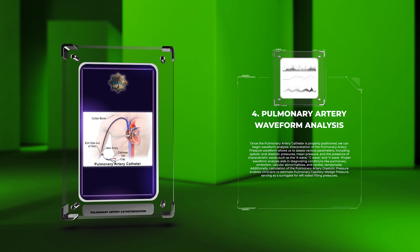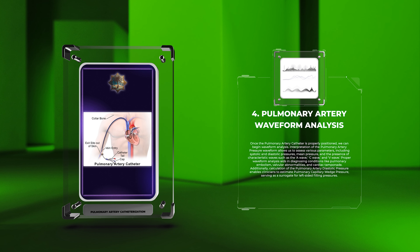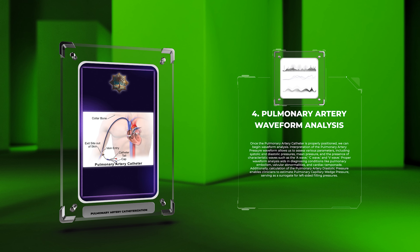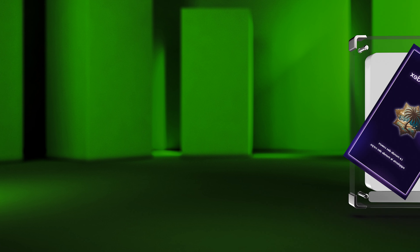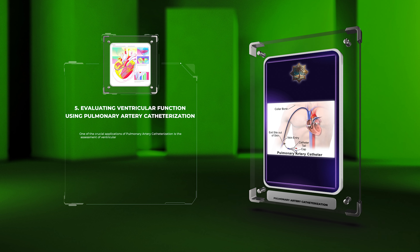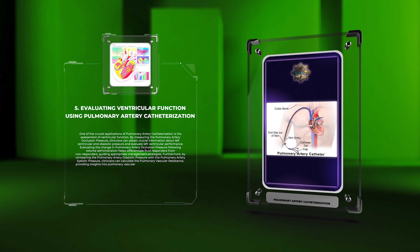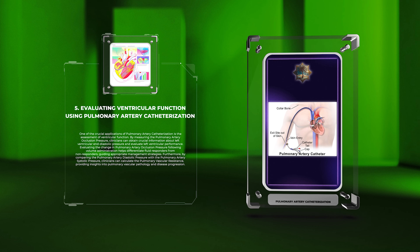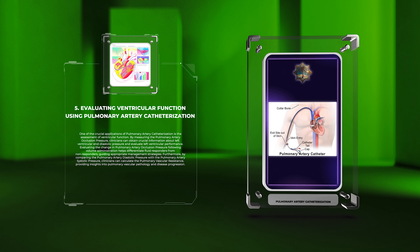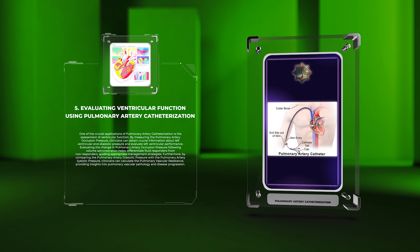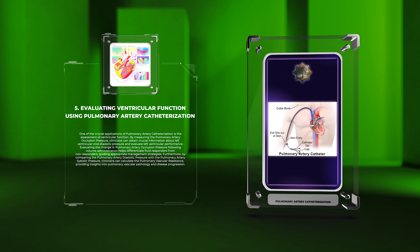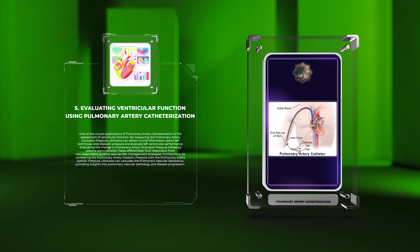Additionally, calculation of the pulmonary artery diastolic pressure enables clinicians to estimate pulmonary capillary wedge pressure, serving as a surrogate for left-sided filling pressures. One of the crucial applications of pulmonary artery catheterization is the assessment of ventricular function. By measuring the pulmonary artery occlusion pressure, clinicians can obtain crucial information about left ventricular end-diastolic pressure and evaluate left ventricular performance.